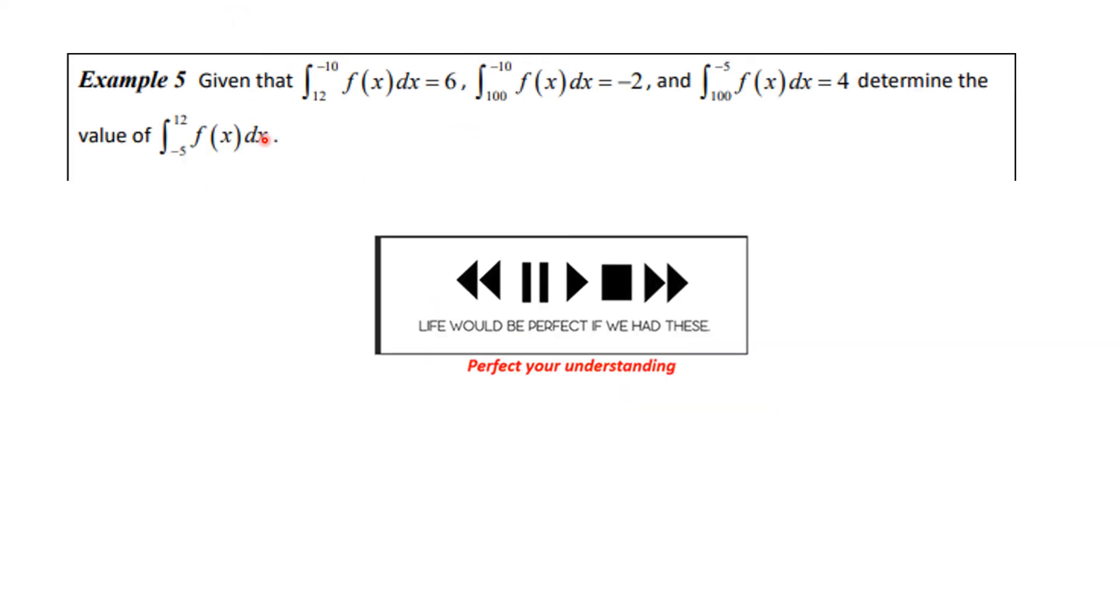Here's example 5 for you. You're going to do this in a moment. So given that I tell you that the integral from 12 to minus 10 of f(x)dx is 6, the integral from 100 to minus 10 of f(x)dx is 2, and the integral from 100 to minus 5 of f(x)dx is 4, I want you to determine the value of the definite integral from minus 5 to 12 of f(x)dx. You know what to do.